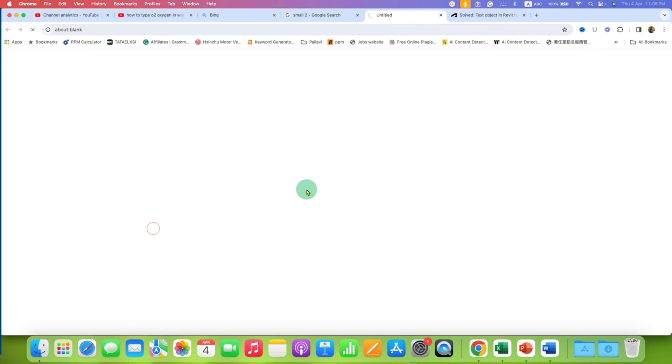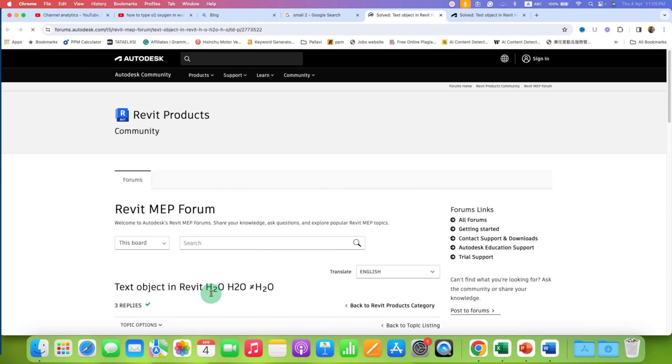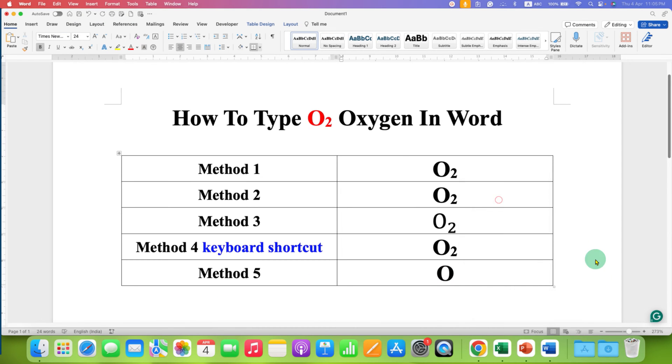Open the web page, then copy the small 2 at the bottom and paste it into the document.